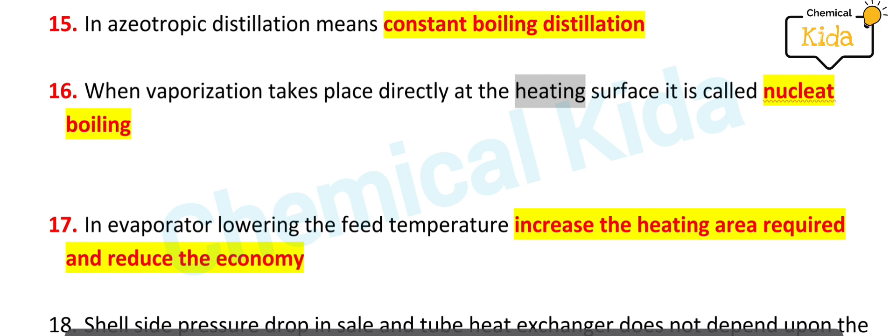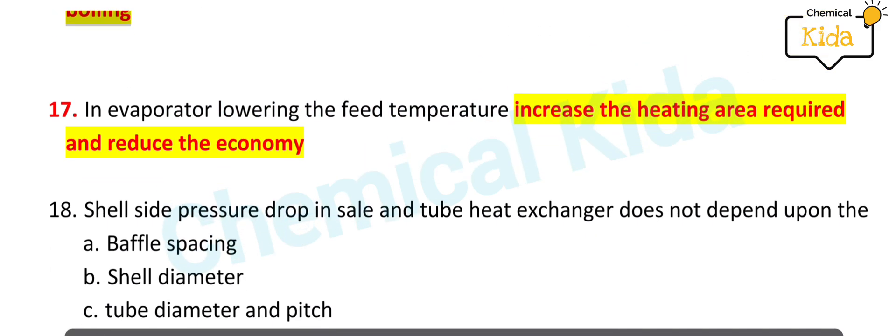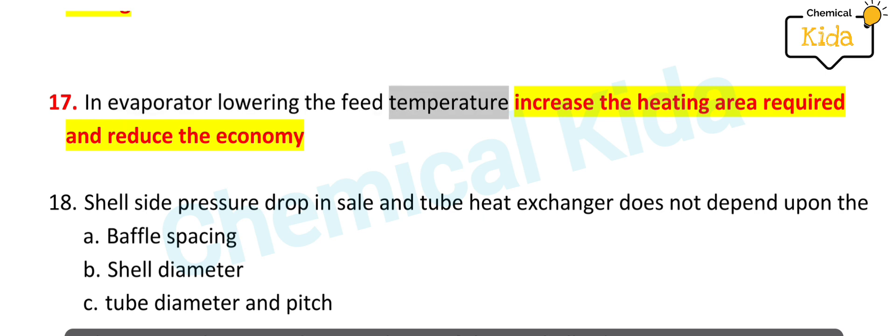In azeotropic distillation means constant boiling distillation. When vaporization takes place directly at the heating surface, it is called nucleate boiling. In evaporator, lowering the feed temperature increases the heating area required and reduces the economy.